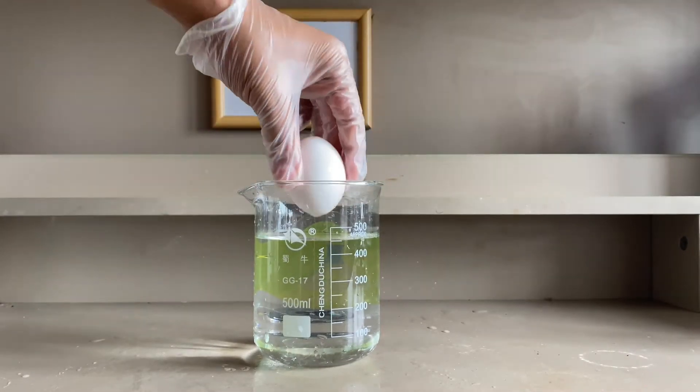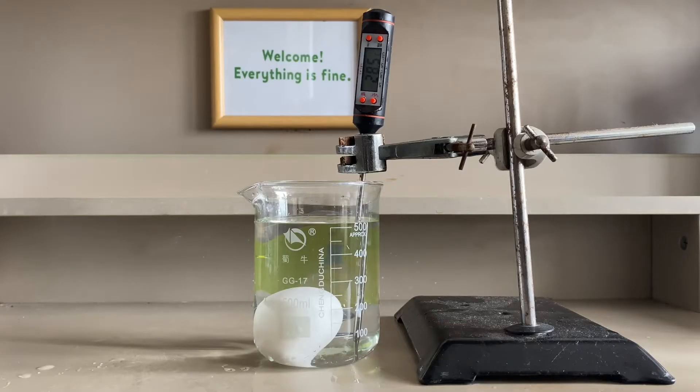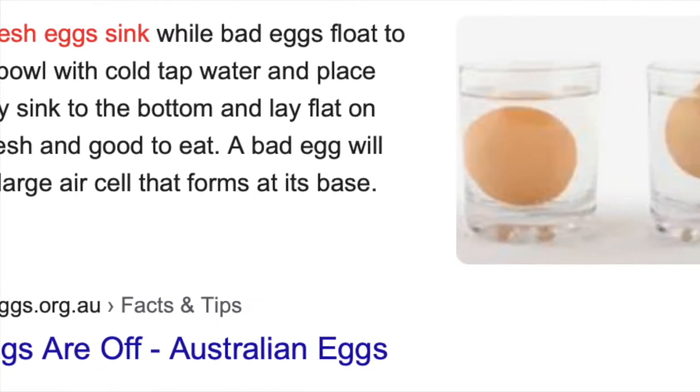To do that, I first lowered an egg into a beaker of room temperature water. As you can see, the egg sinks, which is a good indication that it is still raw.